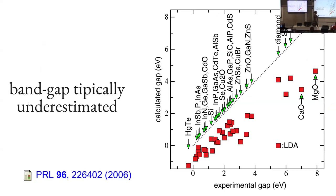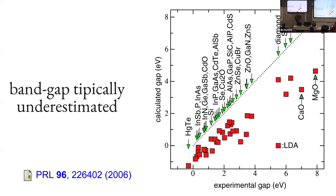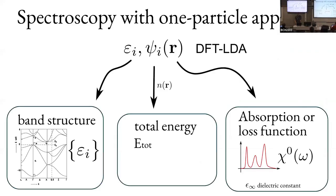If you look at something else, for example the band gap, it is systematically underestimated. We know that there is the fact that we use an approximation, and also the fact that we are interpreting something that shouldn't be interpreted as such. The HOMO-LUMO gap in Kohn-Sham is not the ionization gap even if you were exact, so we have to go beyond this.